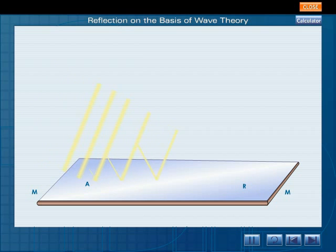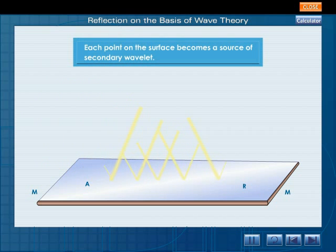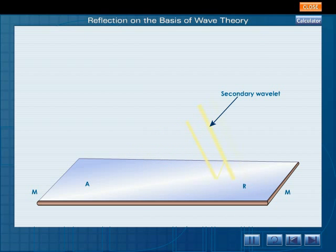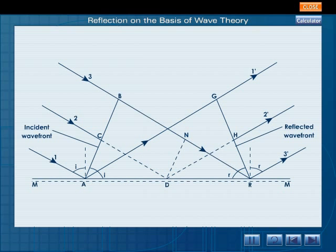According to Huygens' principle, each point on the surface becomes a source of secondary wavelet. These secondary wavelets travel in the same medium. By the time B reaches R, the wavelet from A gets time BR by V to grow and produces a spherical wave front of radius AG. That is, the radius is equal to the distance travelled in this time.